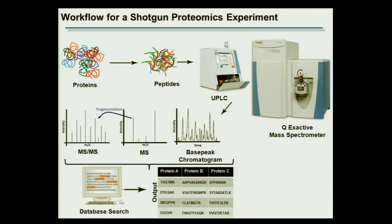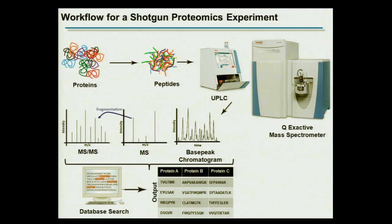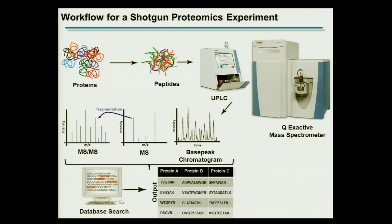Before getting into details, I want to show you a workflow for a modern-day mass spectrometry experiment, also called a shotgun proteomics experiment. You isolate proteins from a particular source and bring these proteins to peptides using proteases. We typically use trypsin, which cleaves C-terminal to arginines and lysines. These peptides are then introduced into a mass spectrometer, which is coupled online to a high-performance, ultra-pressure liquid chromatography system.